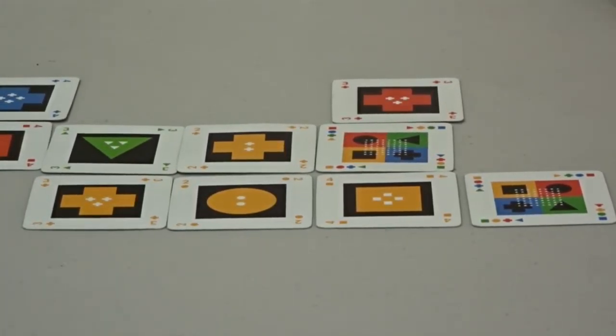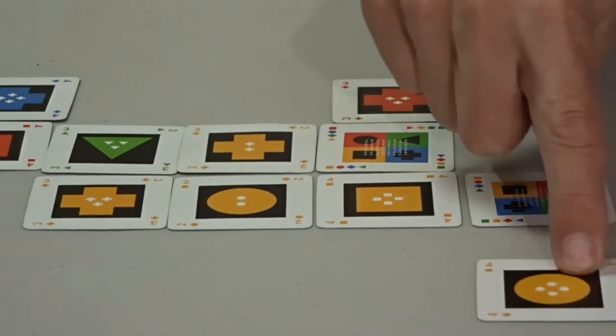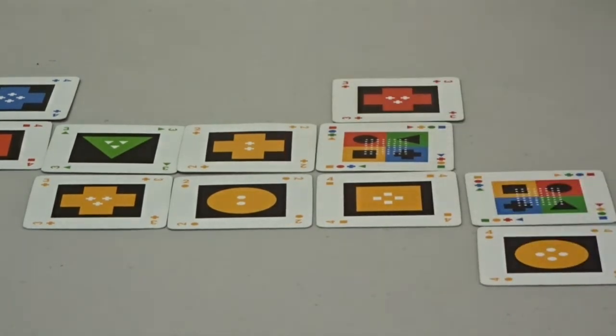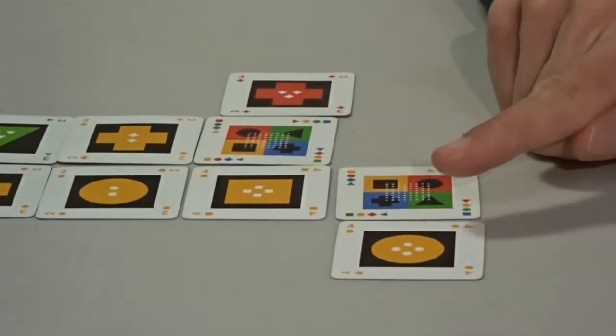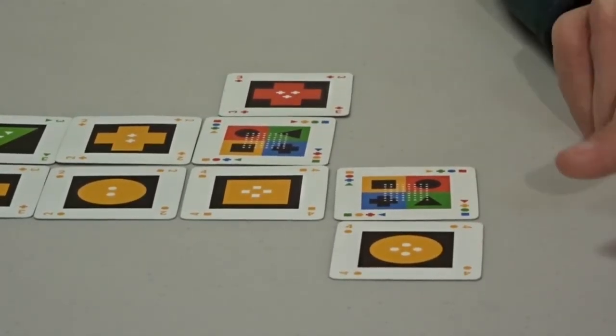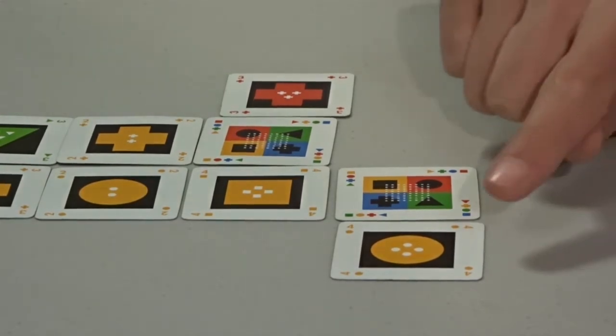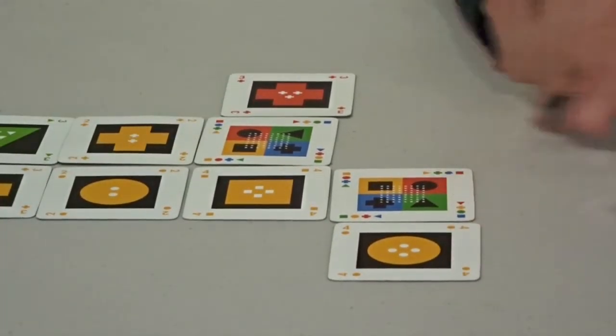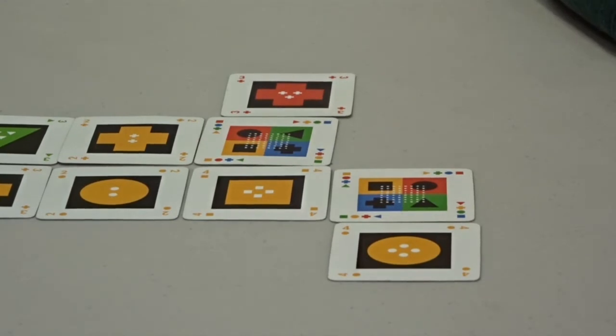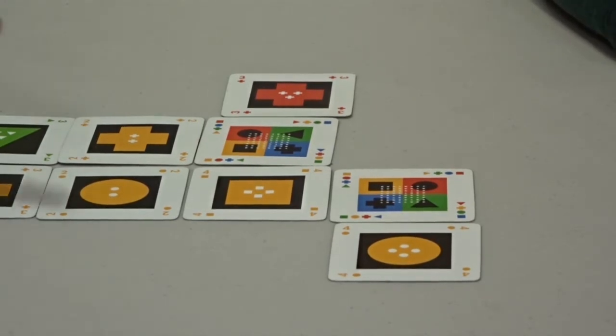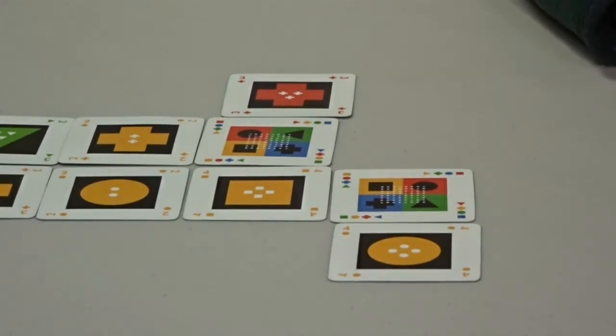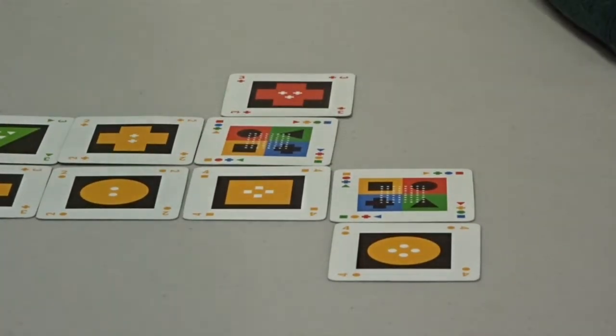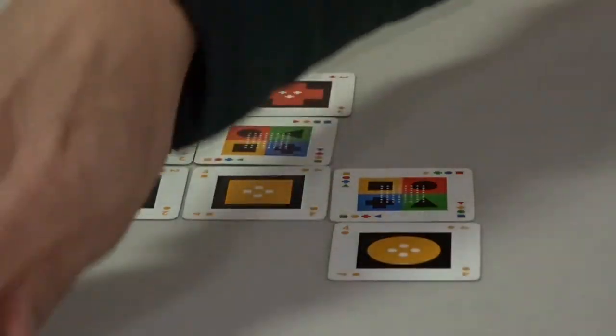And now I do have one more card that can go with that. So now I have, I stay with yellow but now it's different shape, different number. So this will be 5 plus 4 is 9, and another 4 will be 13. And you get to double it because once again you got all four in a row. So that is 26.